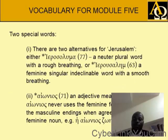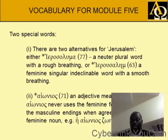There are two alternatives for Jerusalem: either Hierosolyma, a neuter plural word with a rough breathing, or Ierousalem, a feminine singular indeclinable word with a smooth breathing. Aionios, here an adjective meaning eternal — aionios never uses the feminine forms; it uses the masculine endings when agreeing with a feminine noun. So here: aionios zoe — eternal life.